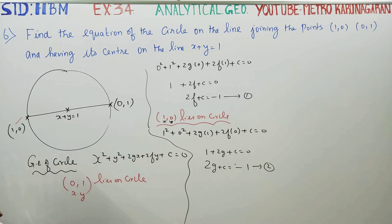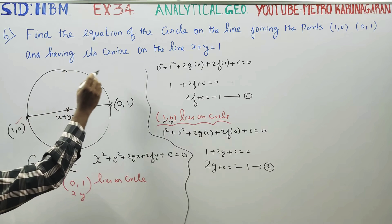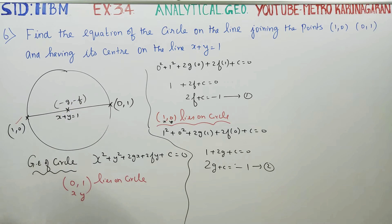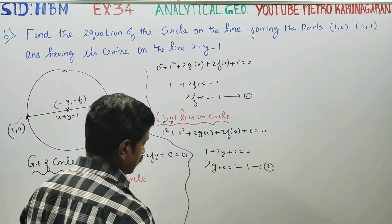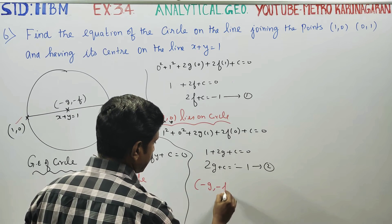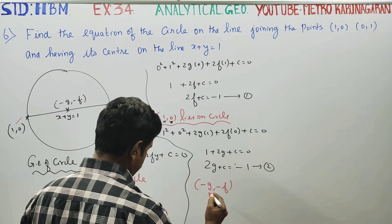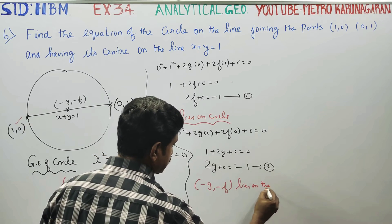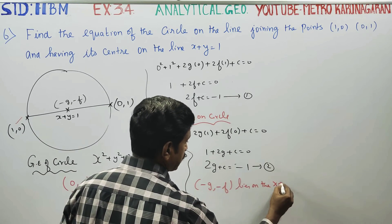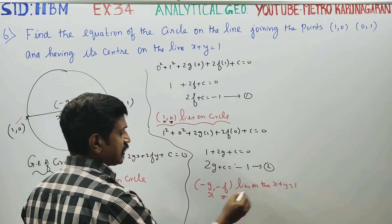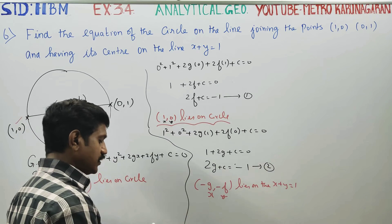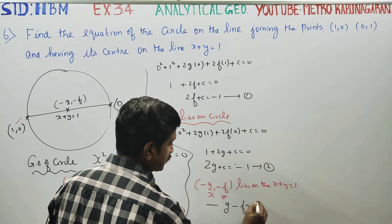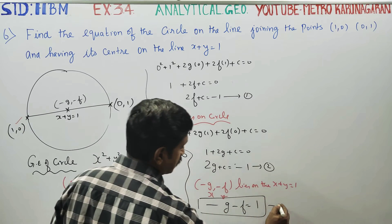The centre of the circle is at (minus g, minus f). This centre lies on the line x plus y equal to 1. Substituting: minus g plus minus f equal to 1, so minus g minus f equal to 1. This is the third equation.